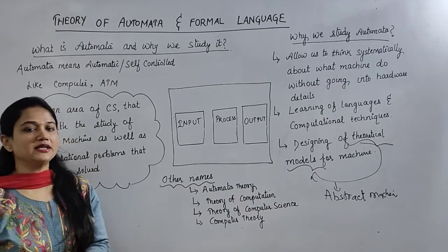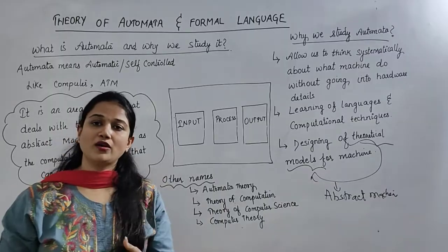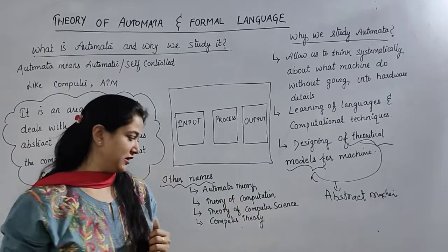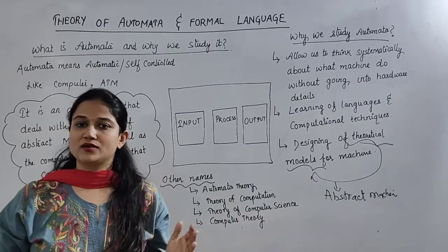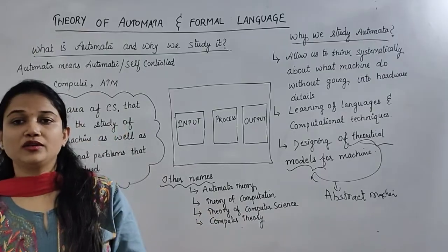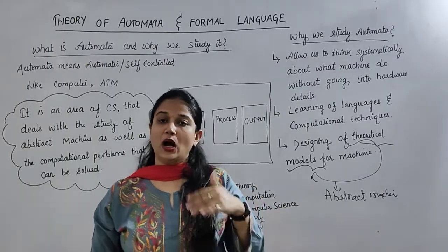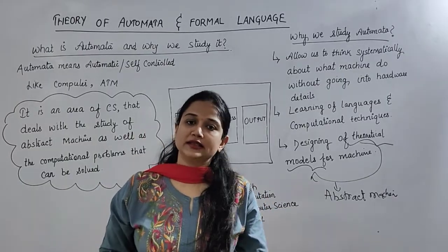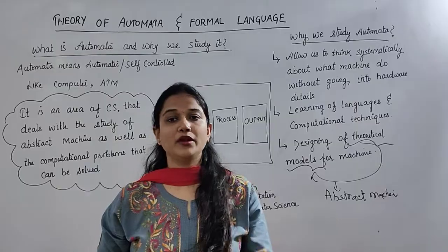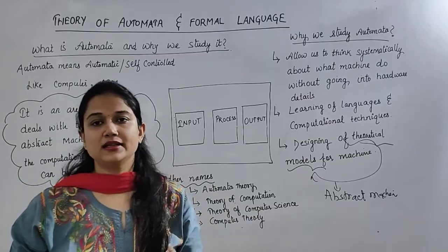Other names for this subject are automata theory or theory of computation. Automata theory and theory of automata both come under theory of computation. It is also called theory of computer science, because the whole computer science concept depends on it. It is also called computer theory — how computers are working through languages, and how those languages are written and recognized. So this is all about what is automata and why we study this subject.